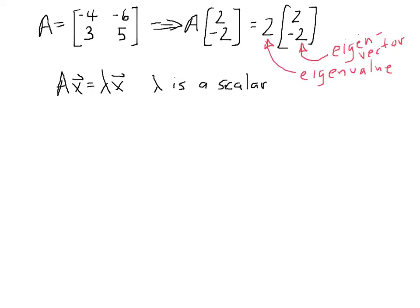The first thing I'll do is I'll move the lambda x to the left side. So we have A x minus lambda x equals 0. And A x and lambda x are vectors, so this must be the 0 vector. So I'll indicate that.